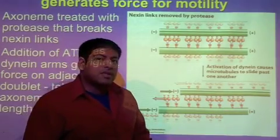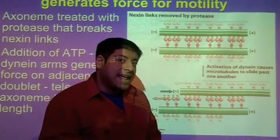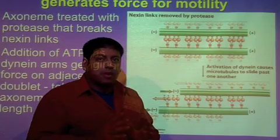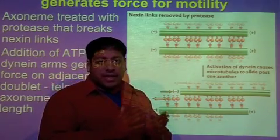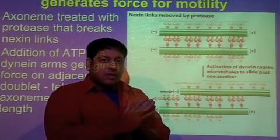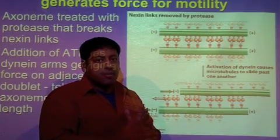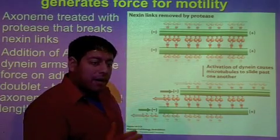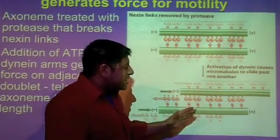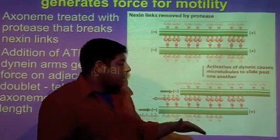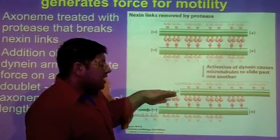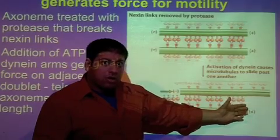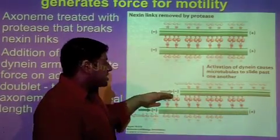The other important thing about this experimental setup is that they removed the nexin protein. Nexin (N-E-X-I-N) is the rubber band-like protein found between neighboring doublets that restricts the motion, or how much force is produced, on neighboring microtubules. By removing nexin and allowing this cross-bridge cycle to occur, we see a telescopic-like motion — the top microtubule keeps extending because there's nothing to restrict how far it can go.